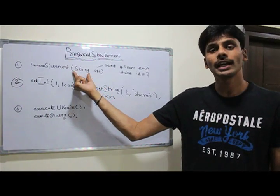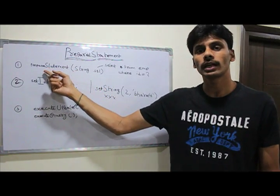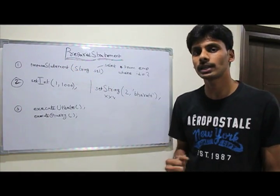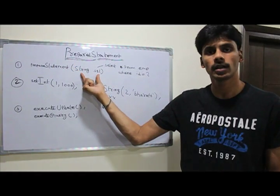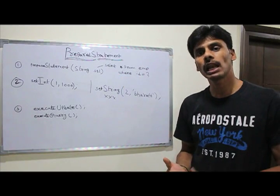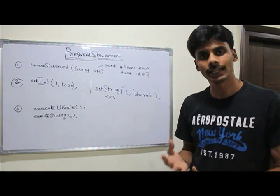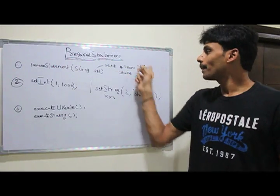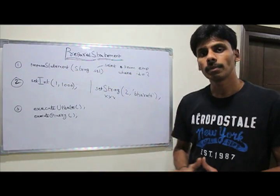The only difference here, when you create a statement, you simply say connection.createStatement, you don't pass any parameters. But in case of prepared statement, you pass one parameter, which is the string, which could be DML or DQL, insert, update, delete statements or the select query, which will be pre-compiled right when you create the prepared statement.